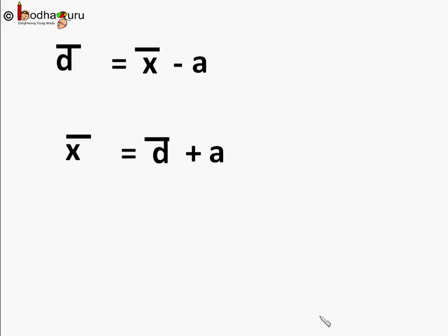So assumed mean method is very efficient and time-saving when xi and fi are large values. To revise, all you need to do is find A, which is a median value of all the xi. Find deviation xi minus A for each row, then product of fi and di for each row. Then sum all of them and divide by frequency. You will get mean deviation, that is d bar, and add it with A, the assumed mean which you took, to get the x bar.